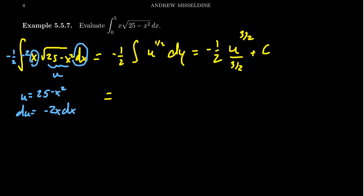Since you're dividing by 3 halves, you're going to get the negative 1 half, but if you divide by 3 halves, you should multiply by 2 thirds. The 2 should cancel, u to the 3 halves plus a constant. So in the end, you get this antiderivative of negative 1 third, and u was 25 minus x squared, to the 3 halves plus a constant. This gives us our antiderivative.